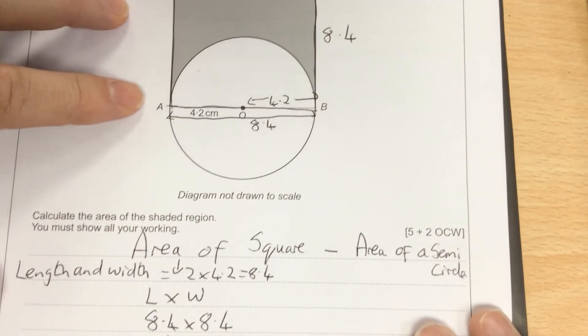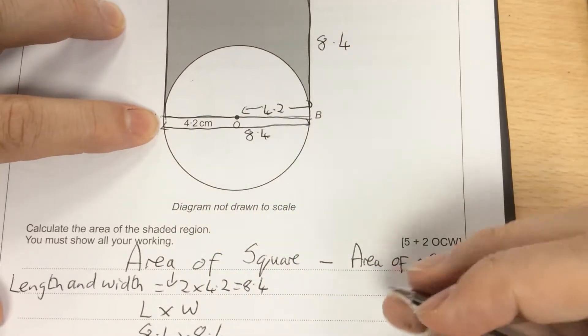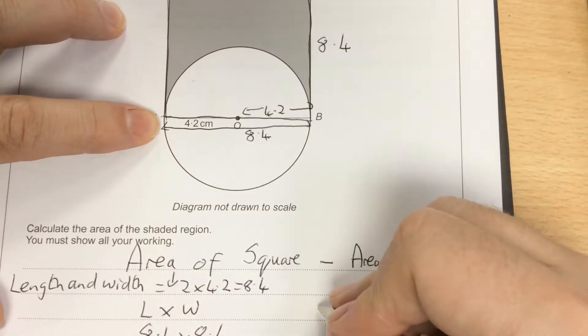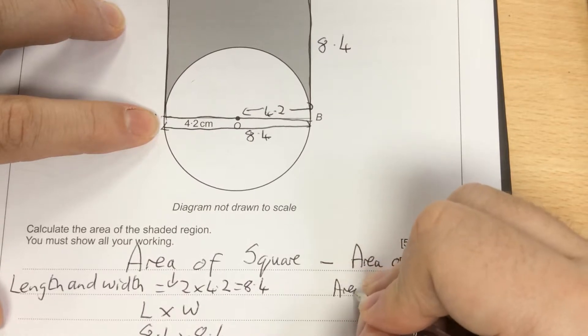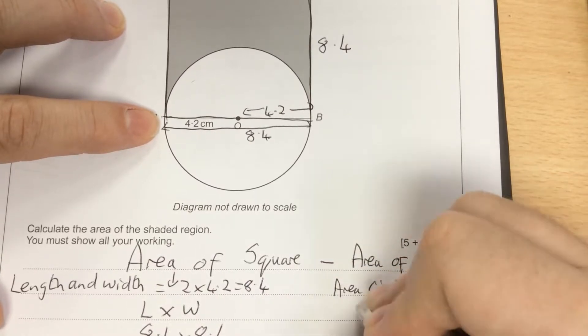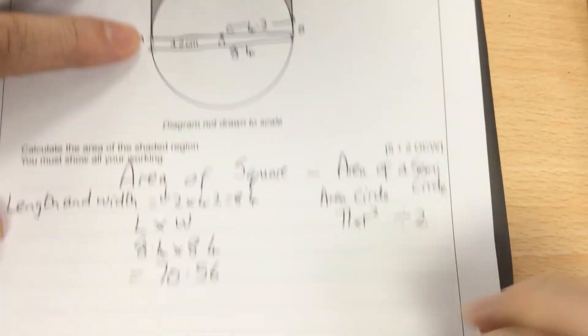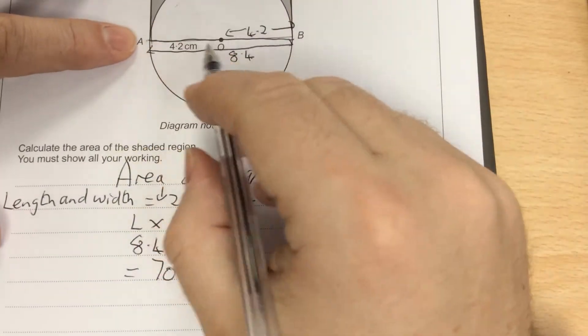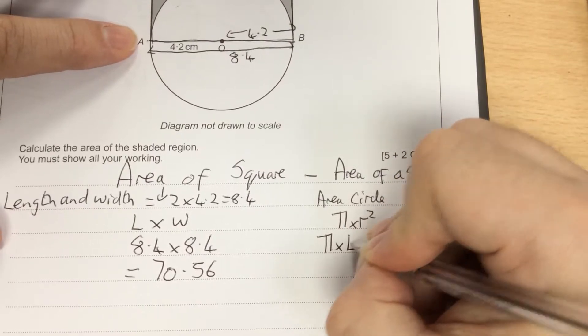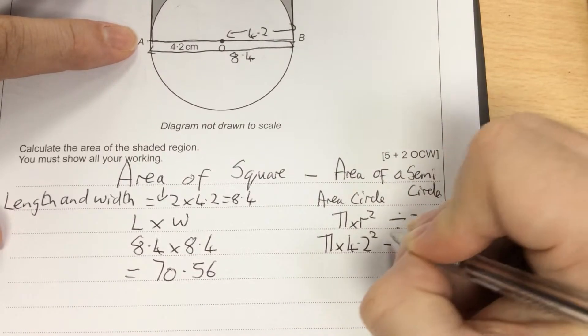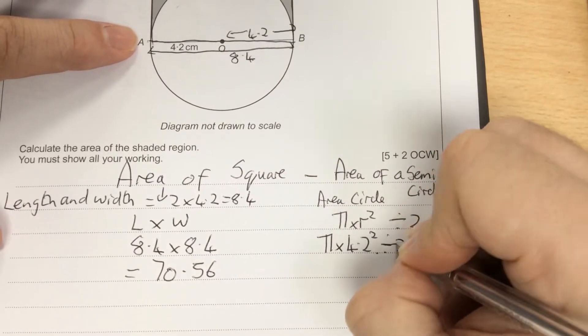Next, I'm going to be taking away the area of the semi-circle. So the area of the circle is pi r squared, and because this is a semi-circle, I've got to divide it by 2. So the radius is 4.2, so it's pi times 4.2 squared, and then divide the answer by 2.